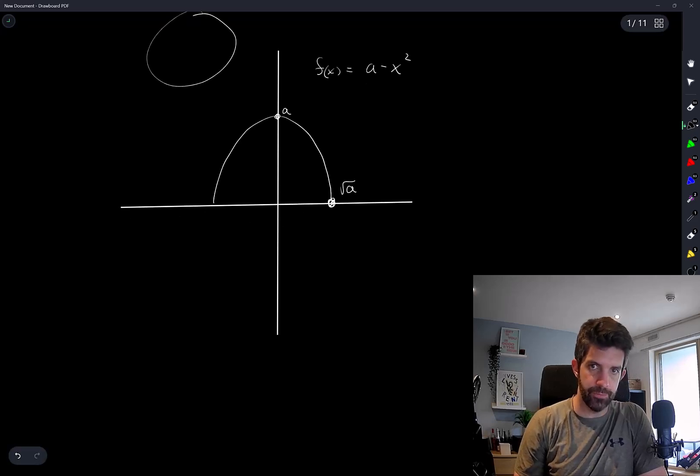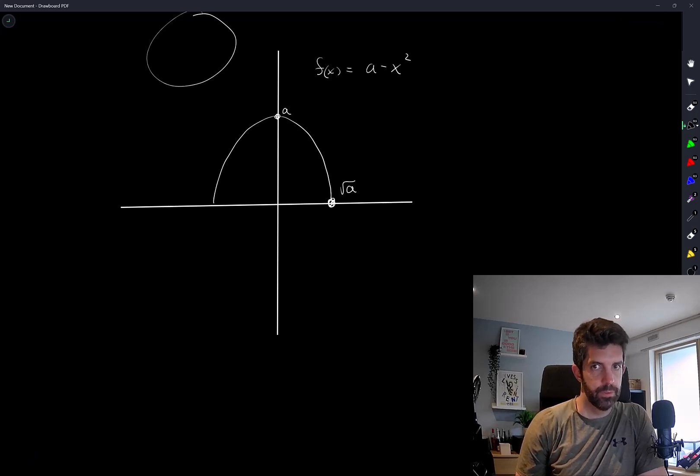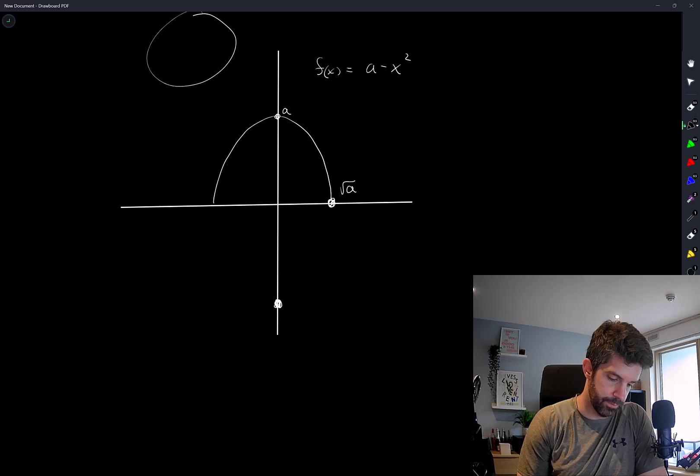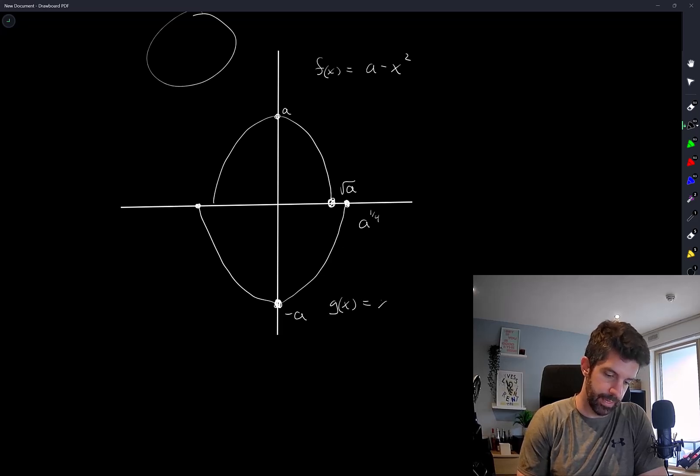And the other function, g of x, equals x to the 4 minus a. So that goes something like this. When x is 0, we're at negative a here. And that value would be a to the 1 over 4. And we have the negative value as well. That's where g of x equals x to the 4 minus a.